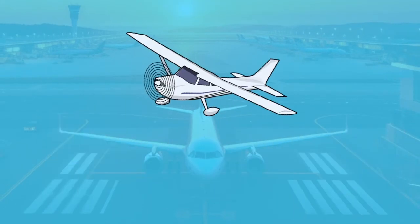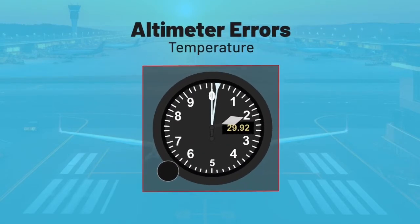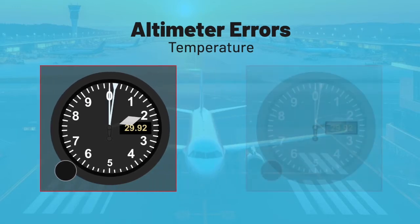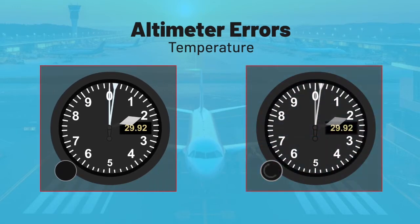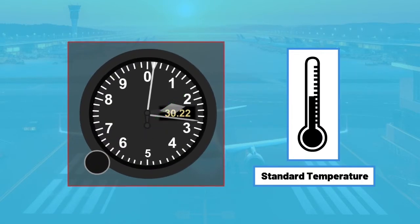The next error I want to talk about is altimeter errors caused by temperature. Altimeters work by finding the difference between standard pressure and the measured static pressure and turning it into an altitude. When the pressure is not standard, we use the altimeter setting window to correct for it. If we get a new pressure setting because the pressure outside has changed, we simply enter that setting into the indicator and the indicated altitude changes accordingly.